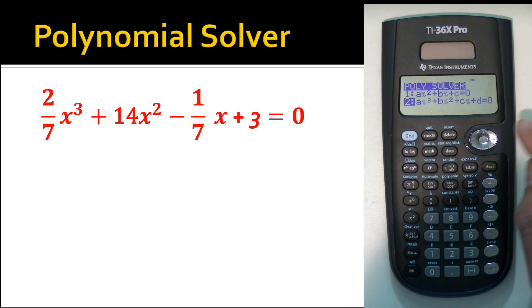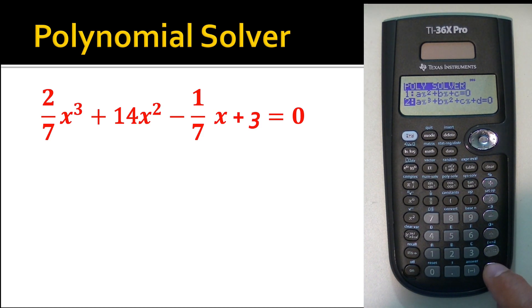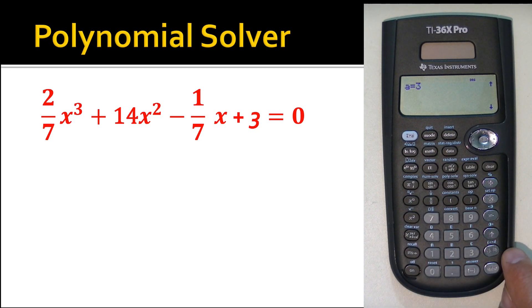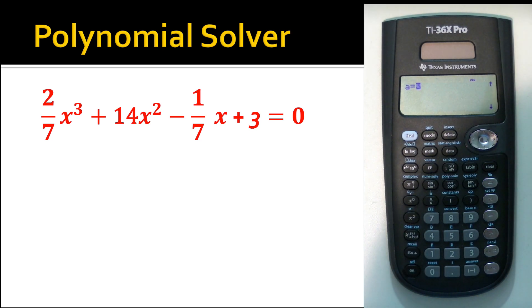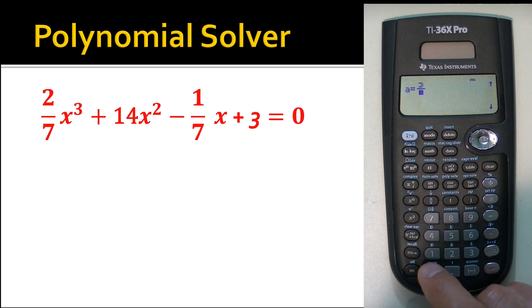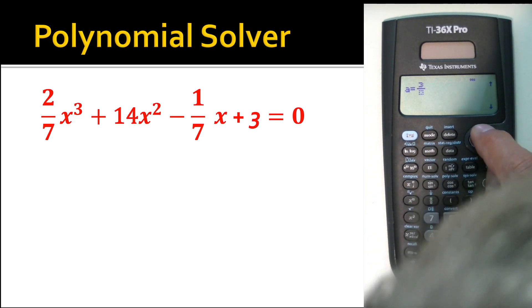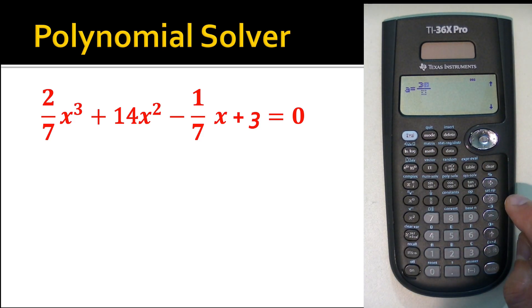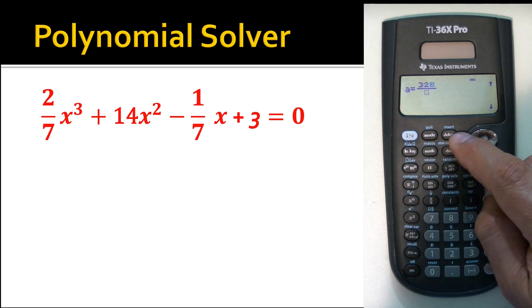Arrow down to the cube and it follows the general format with variables for coefficients a, b, c, and d. Hit Enter and it prompts for each coefficient. It shows a value left over from before because we used 'a' earlier — it remembered that. I want two-sevenths for a, which is the coefficient of x cubed. Hit the fraction key to overwrite; it puts the old value at the top, which I don't want.